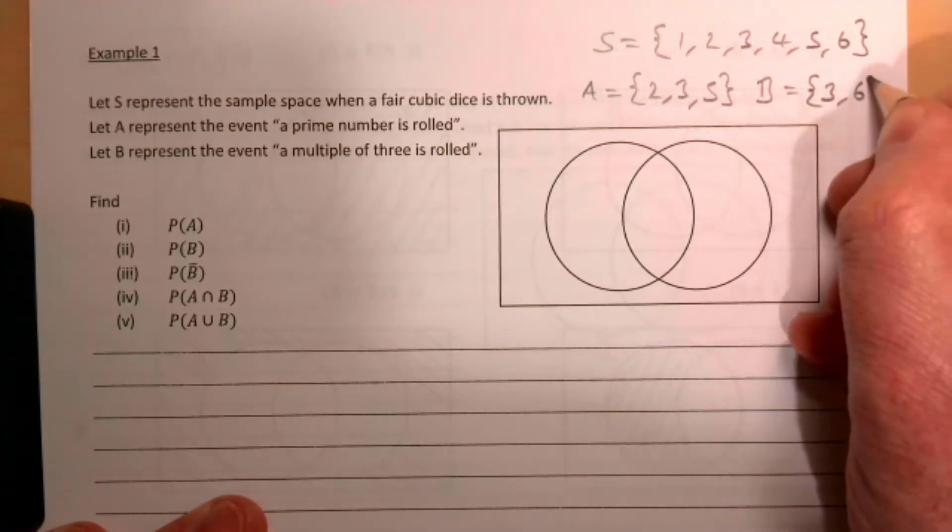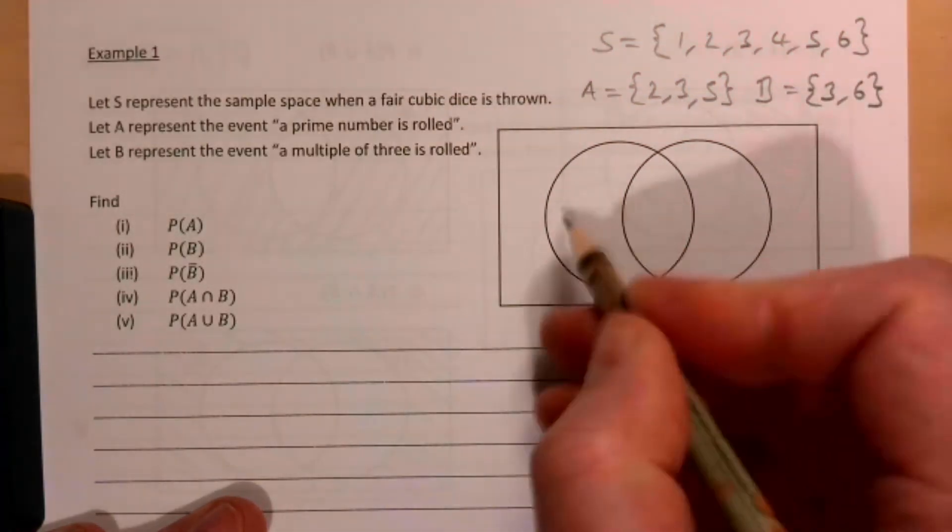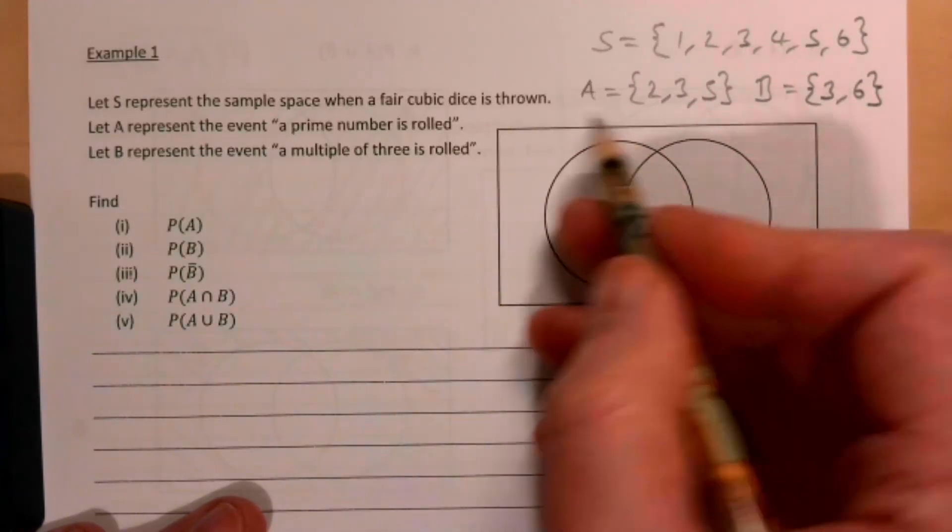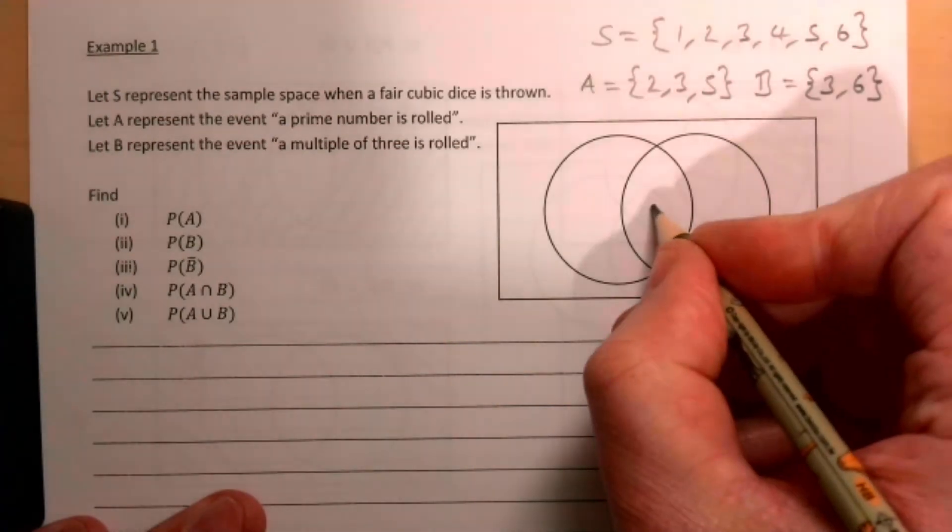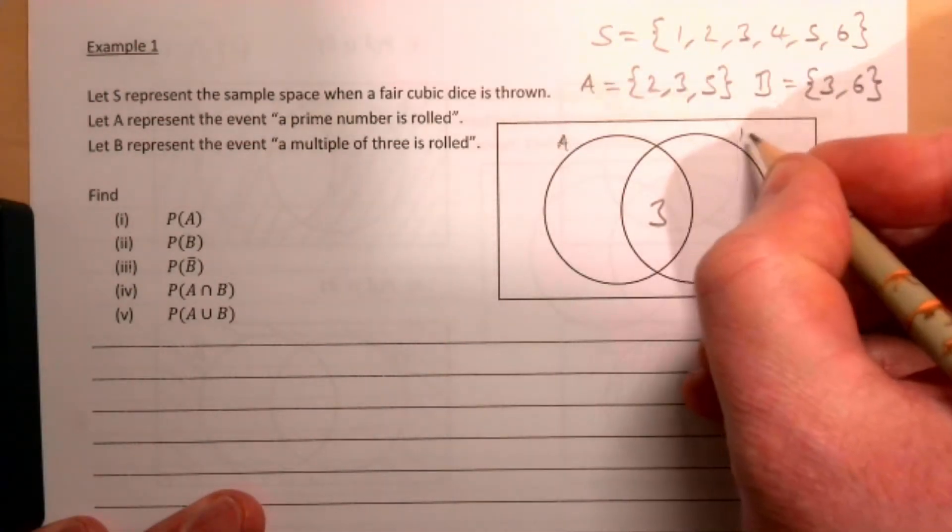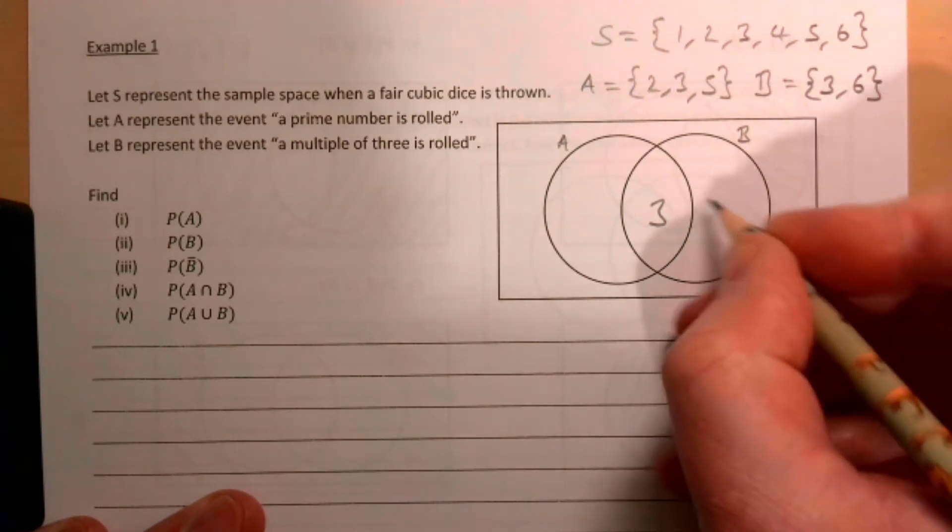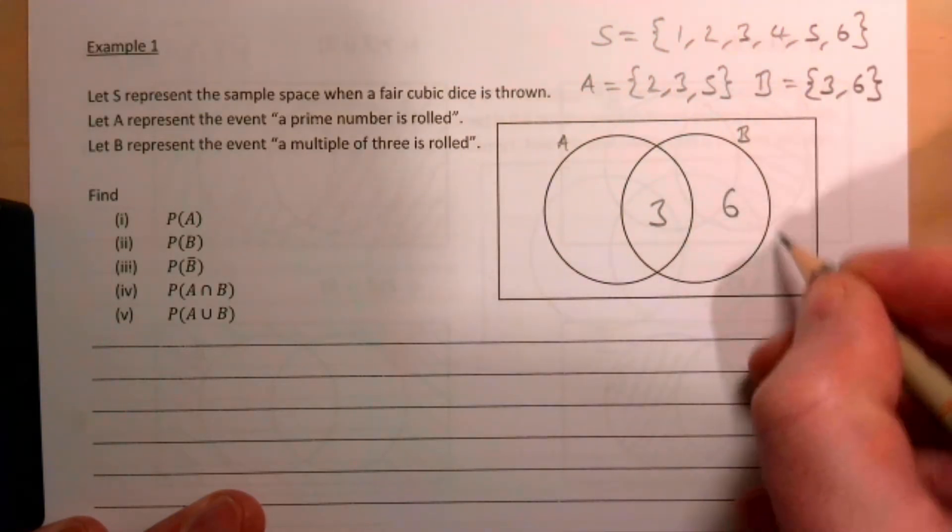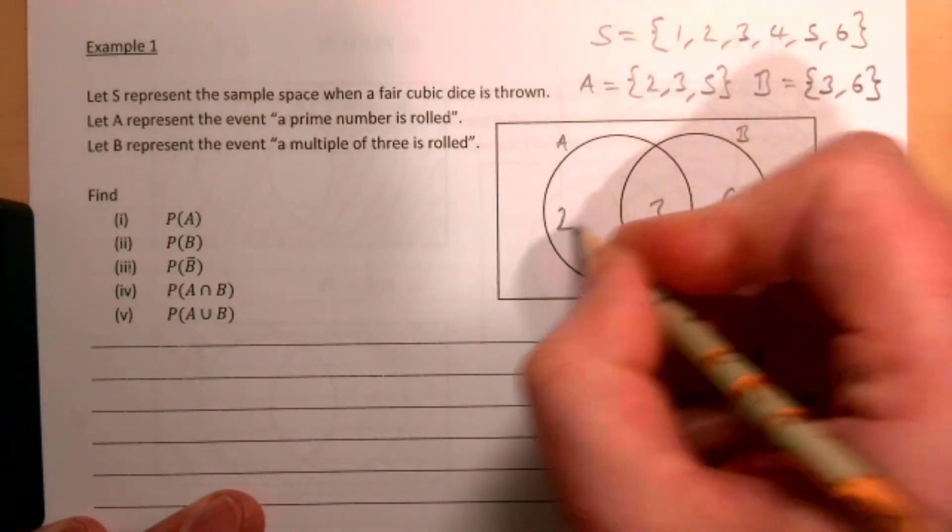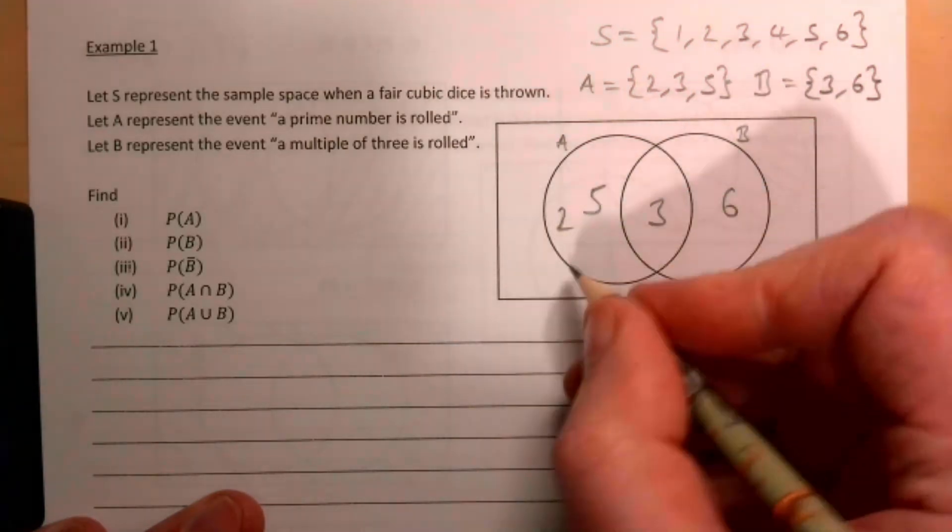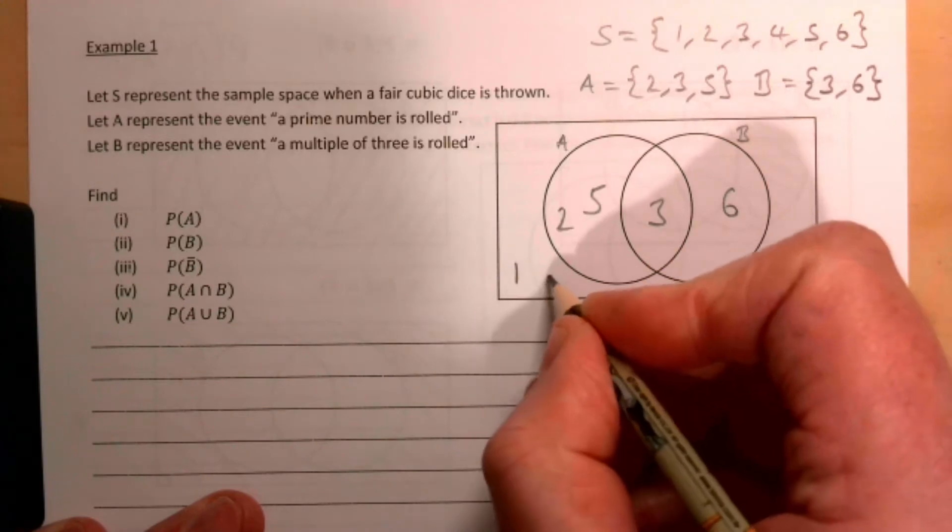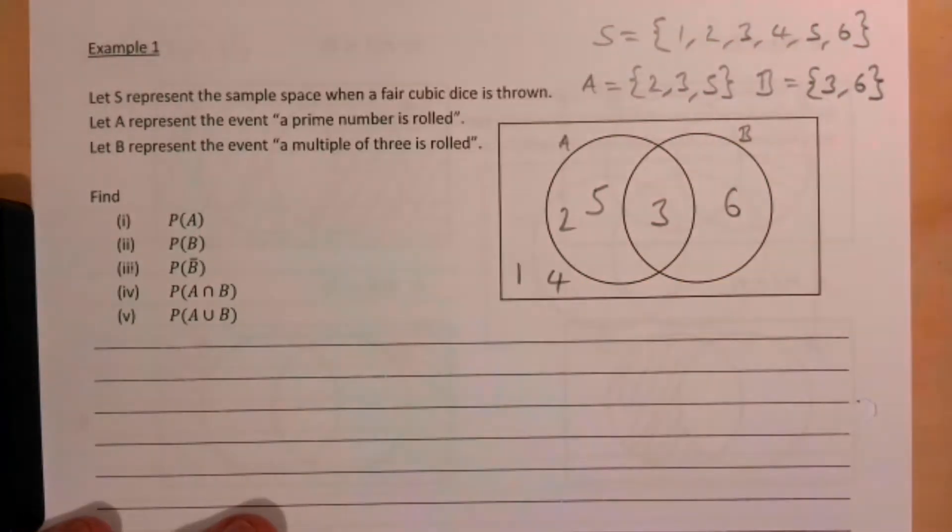Now you can write in your probabilities here if you wish, but we're putting in the numbers 1 to 6. Three you can see is part of both—I have my A here and my B here. Six is going to go in here, two and five are going to go in here. Outside then we're going to have 1 and 4, and that's going to help us work out our probabilities.